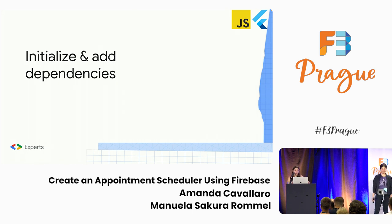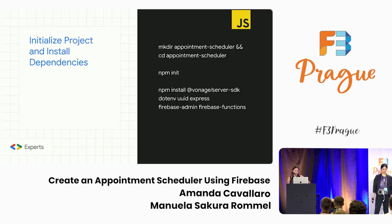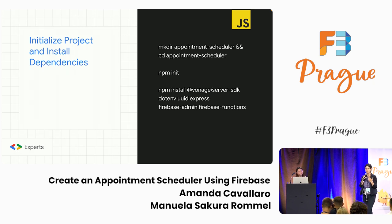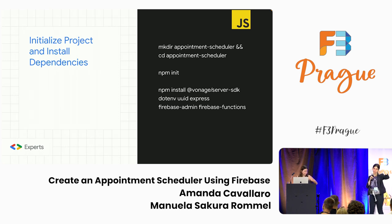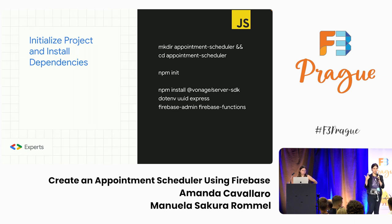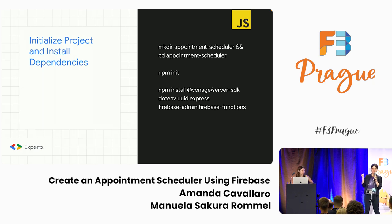Now let's talk about what dependencies we need and how to initialize them. In JavaScript, we create a folder, cd inside it, then do npm init — that prompts you to add information about your project like description and author name. After that, we install the dependencies: the Vonage Server SDK to send SMS, .env to deal with environment variables, UUID, Express, Firebase Admin, and Firebase Functions.